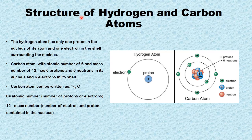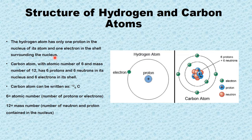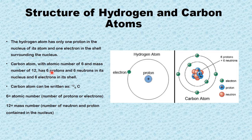Now let's look at a typical structure of hydrogen and carbon atoms. The hydrogen atom has only one proton in the nucleus and one electron in the shell surrounding the nucleus — the nucleus contains only one proton and outside the nucleus we have one electron. In the case of carbon atom, with atomic number 6 and mass number 12, it has 6 protons and 6 neutrons in its nucleus, and 6 electrons around its shell.